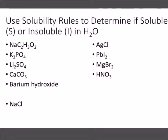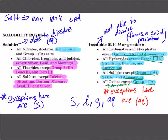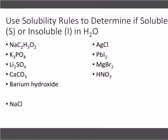NaC2H3O2 — what is the name of that compound? Sodium acetate. If we go back and look at our solubility rules, I look for my anion first. Acetate is right here — all acetates are soluble. Also, group 1 elements — sodium is part of group 1 — they are always soluble. K3PO4: potassium is in group 1, all group 1 elements are soluble. Lithium sulfate: all group 1 elements are soluble.